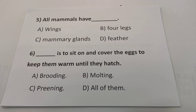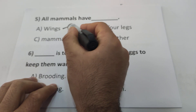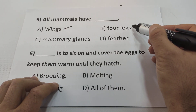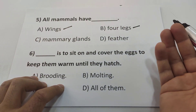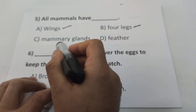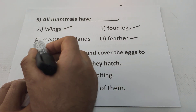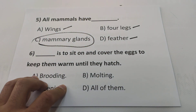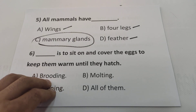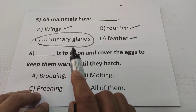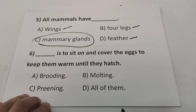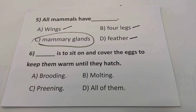Question five: all mammals — no, they don't all have wings. Some have two legs, some have four. They don't have feathers. They have mammary glands — all mammals have mammary glands to produce milk. Question six: brooding — sitting on and covering eggs to keep them warm until they hatch. The answer will be brooding, answer A.